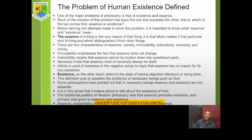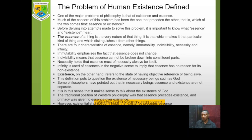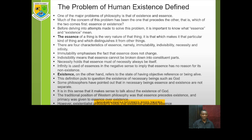Before going into existentialism, it is important to revisit the problem of human existence — the concern of this lecture. The problem has to do with essence and existence: which one comes first? It is more like asking: between the hen and the egg, which one comes first? At first it may look very simple, but look at it critically — it is not something you can easily answer. It is very deep, and you need serious critical thinking before you can give an answer.